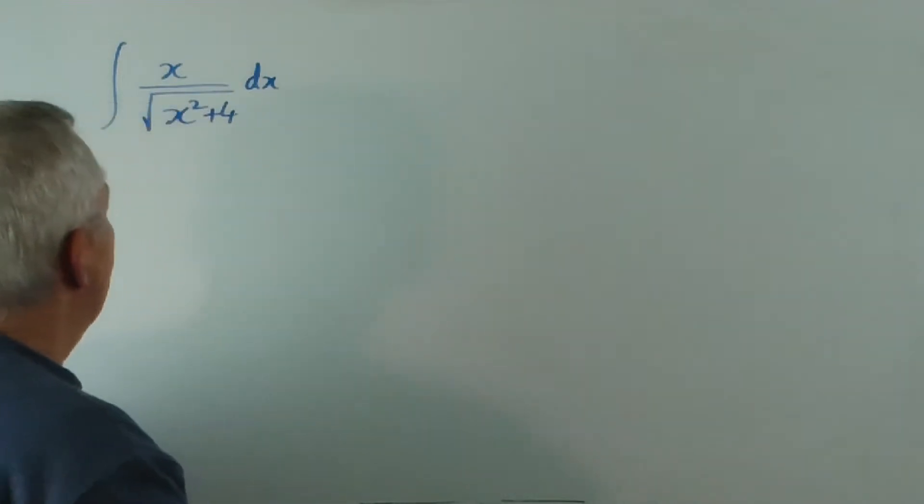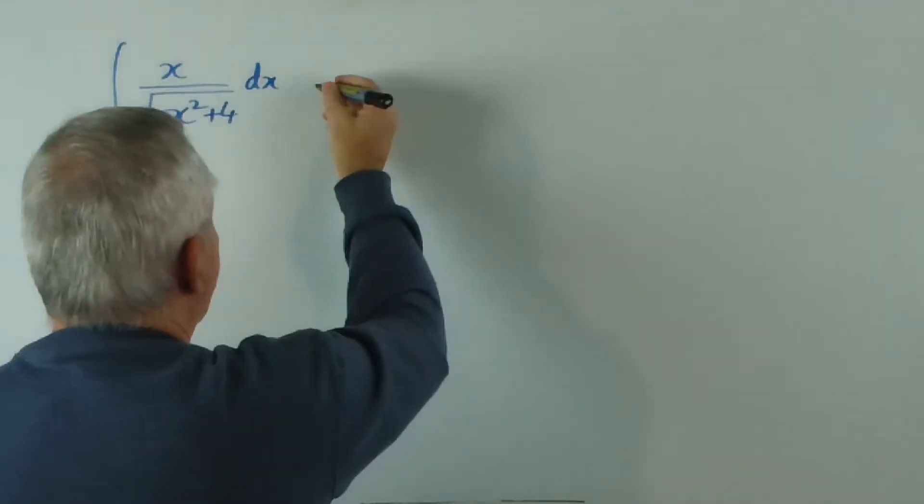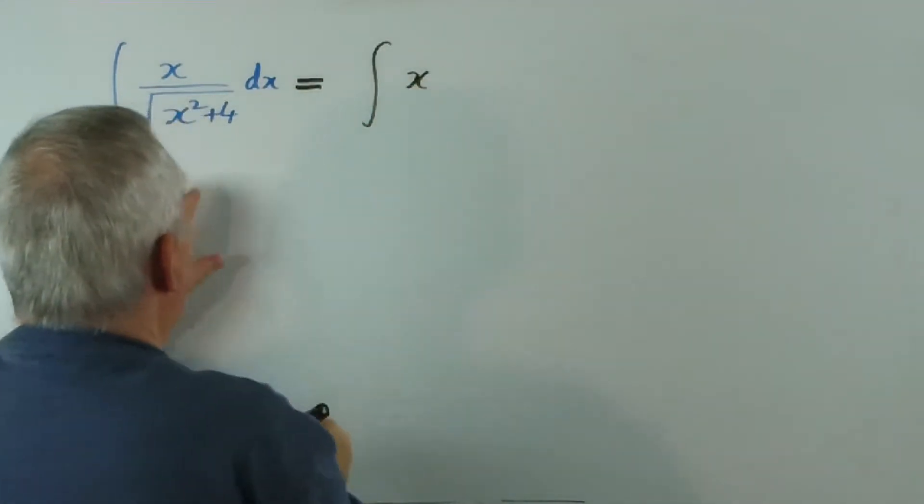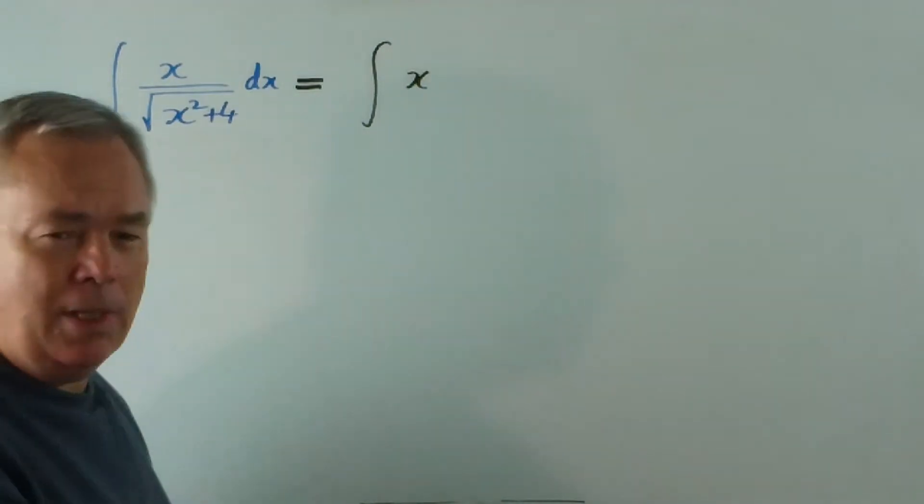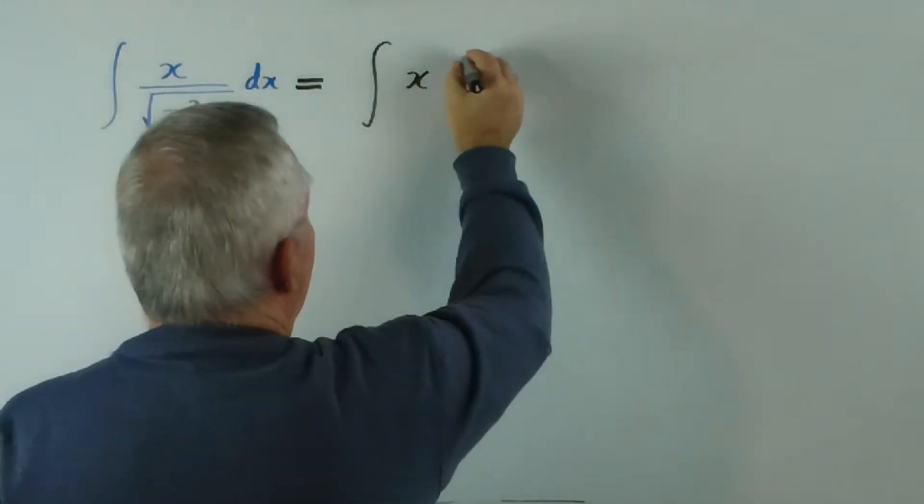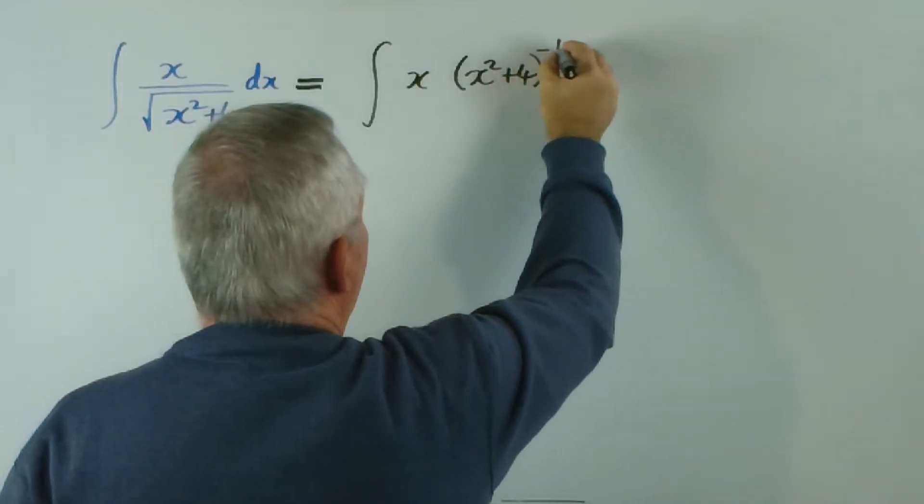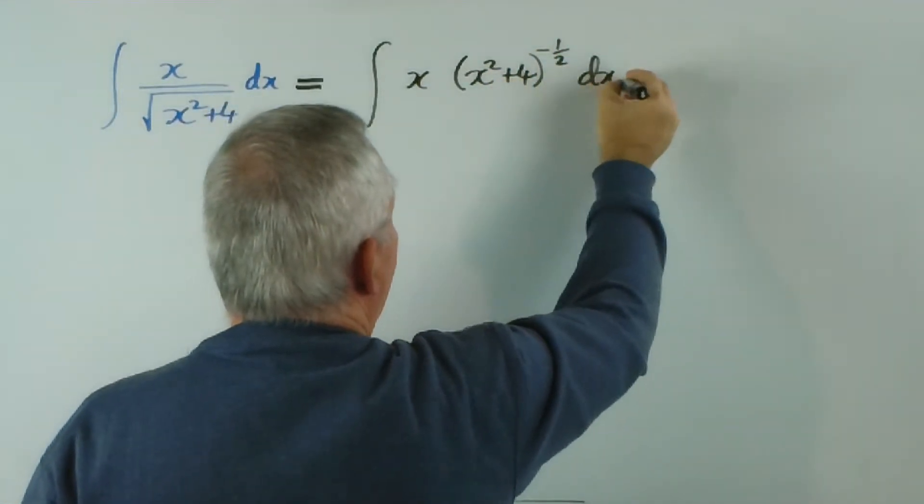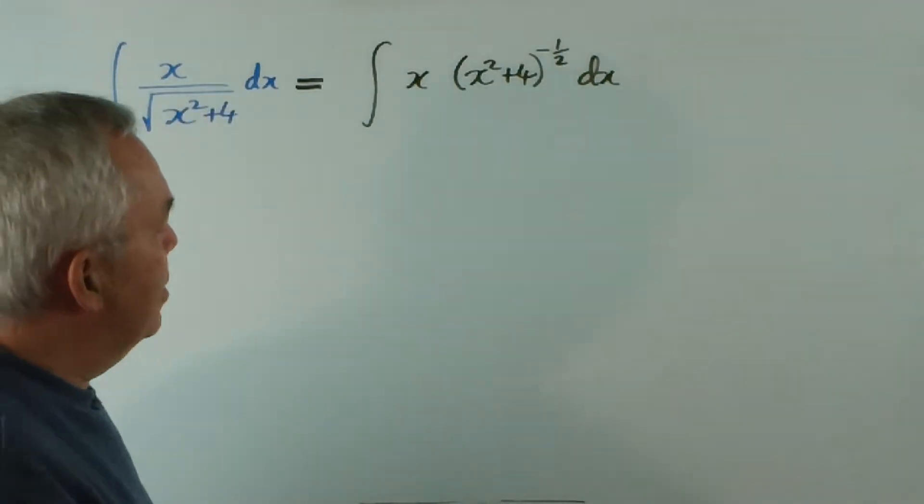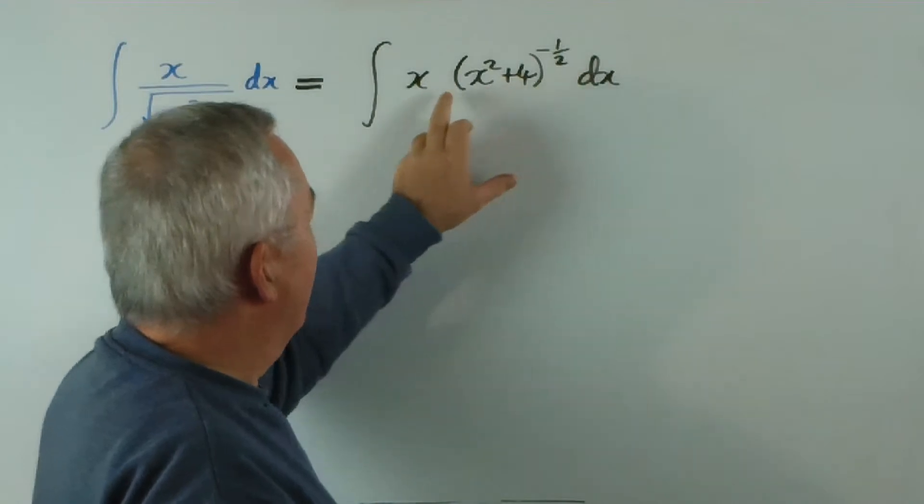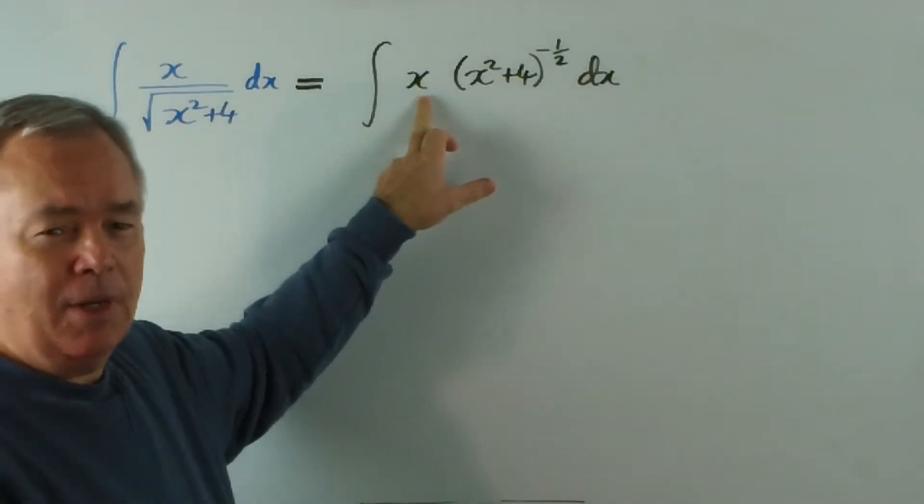And that strongly suggests, very strongly suggests, leave the x and I'm going to change this into index form. So, here we have a function to a power with its derivative at the front, basically.